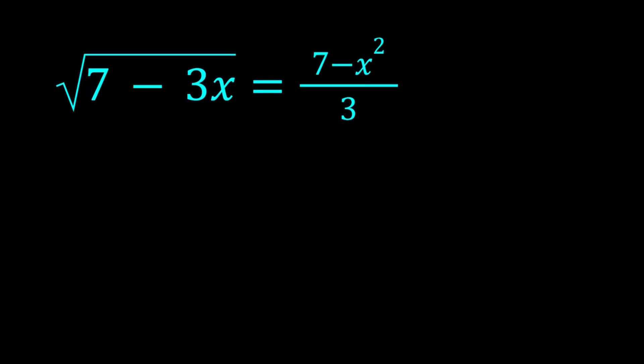I'll be presenting two methods and let's start with the first one. For my first method, I'm going to square both sides. This is going to give me, the radical is going to disappear once I square it and I'll have the square of a quotient.